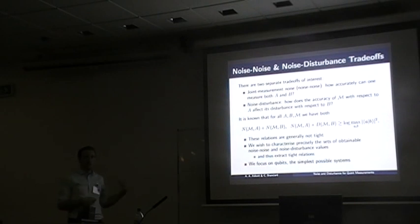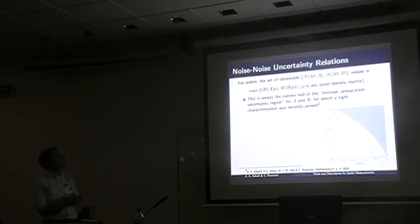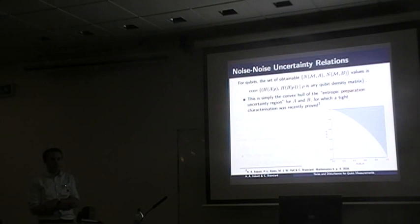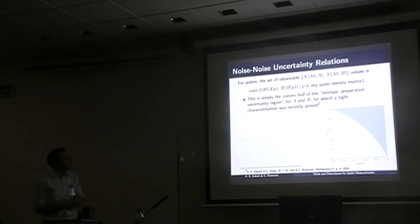We'd like to give tight relations and characterize the set of noise-noise or noise-disturbance values obtainable for a given measurement. To do this, we focus on qubits as the simplest system. For noise-noise relations, we show that the set of obtainable noise values for A and B, taken over all measurements, can be expressed as the convex hull of the set of entropies taken over all states — which is precisely the set of entropic preparation uncertainty values. This links measurement uncertainty to preparation uncertainty.